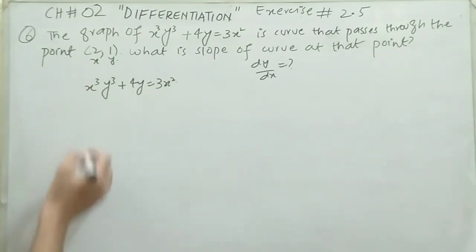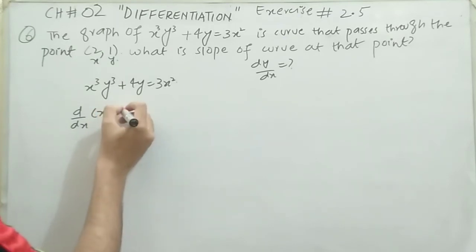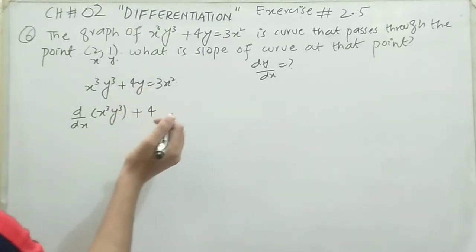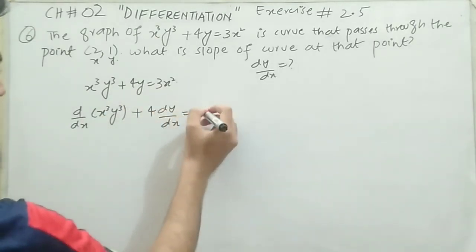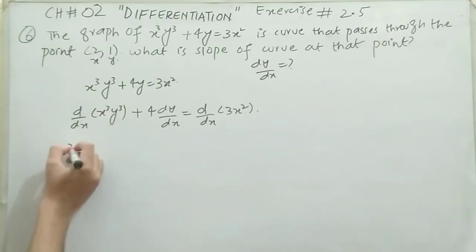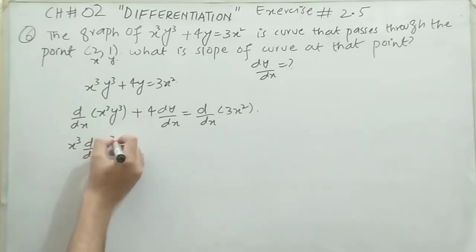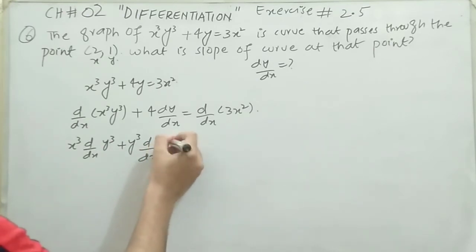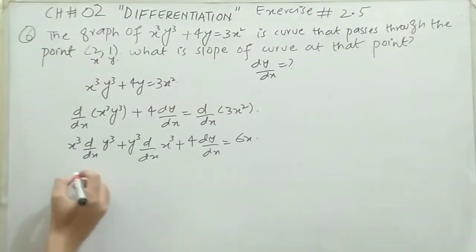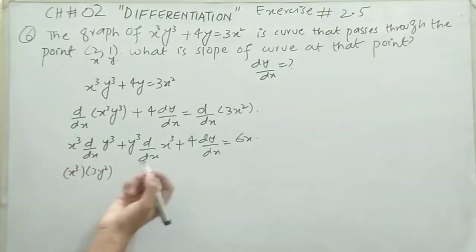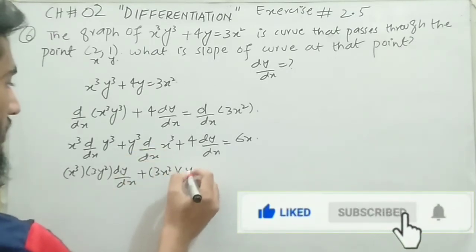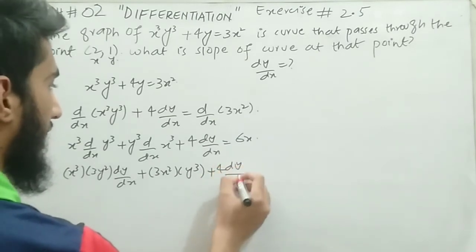Taking d/dx of x³y³ using the product rule: first function x³ times derivative of the second function y³, plus second function y³ times derivative of the first function x³. Plus 4 times dy/dx equals d/dx of 3x², which is 6x. On the left side: x³ times 3y² times dy/dx, since y is an inner function, plus y³ times 3x², plus 4 times dy/dx equals 6x.